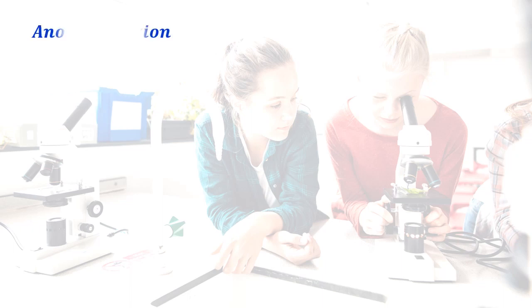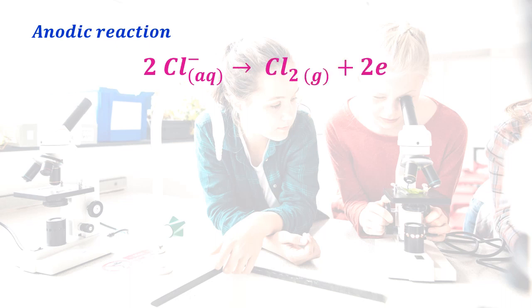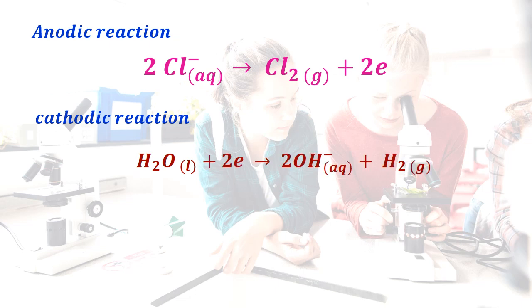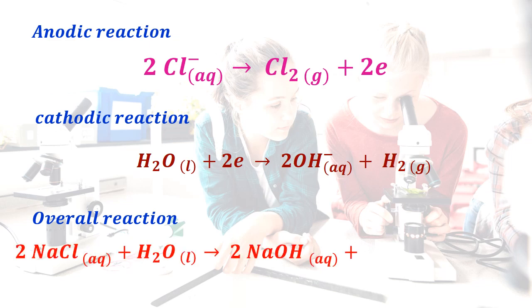Now, the balanced chemical equations: at the anode (positive terminal), chloride ions are oxidized to chlorine gas. At the cathode (negative terminal), water forms hydroxide ions and hydrogen gas. The overall reaction: 2NaCl(aq) + H2O(l) → 2NaOH(aq) + Cl2(g) + H2(g).